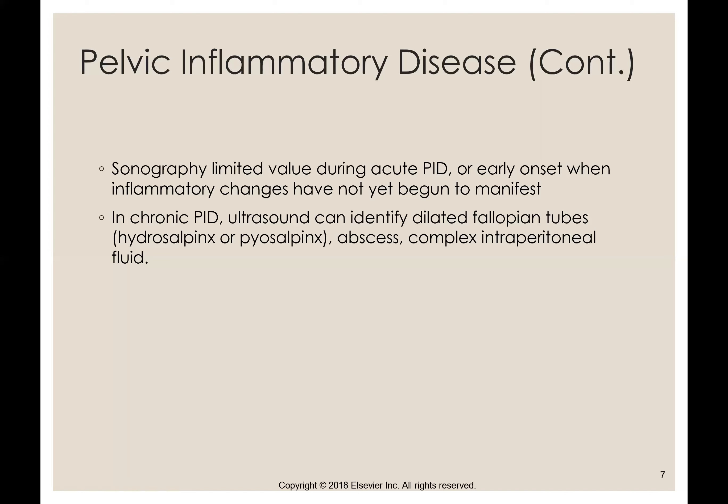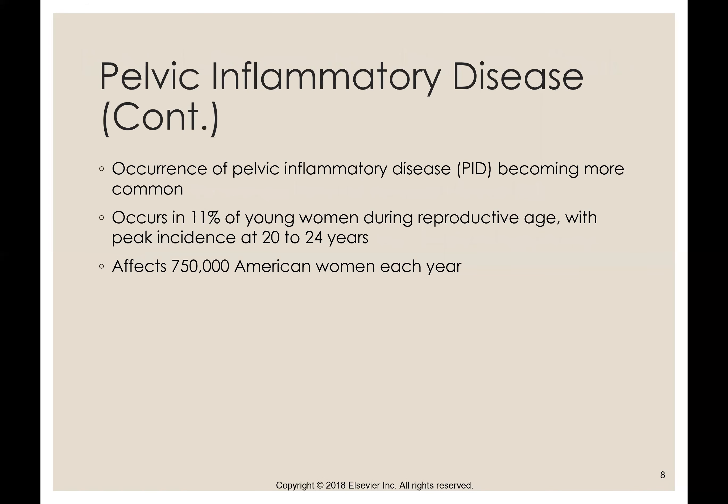The PID patients I've scanned who have had tubo-ovarian abscesses are just getting out of the hospital — they are that sick, needing antibiotics. So if you're going to be scanning patients who have these abscesses, you'll probably be doing it in the hospital or as a follow-up outside the hospital. The occurrence of pelvic inflammatory disease is becoming more common; it occurs in about 11% of young women during reproductive age, with peak incidence at 20 to 24 years, and it affects 750,000 American women each year.